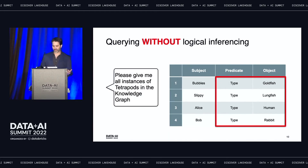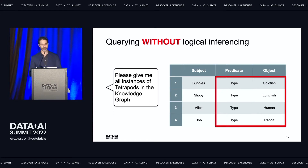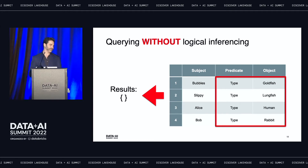Without logical inferencing, our Sparkle query engine works like a SQL engine in an RDBMS. When a scientist issues the query 'give me all instances of tetrapods in the knowledge graph,' the engine takes that query, transforms it into Spark operations, scans the table, sees that there are no concrete instances of tetrapods in the knowledge graph, and returns the empty set—because we're not using logical inferencing and there are no concrete instances of that class.